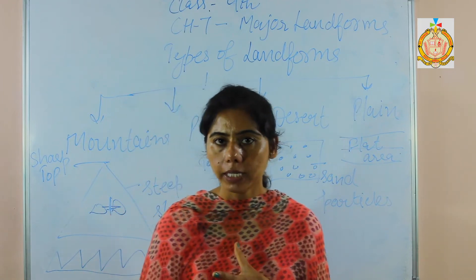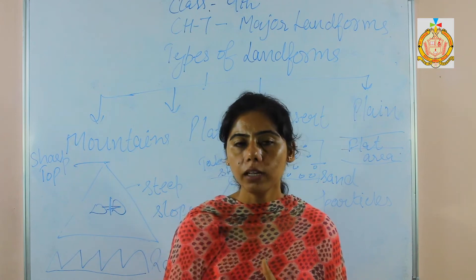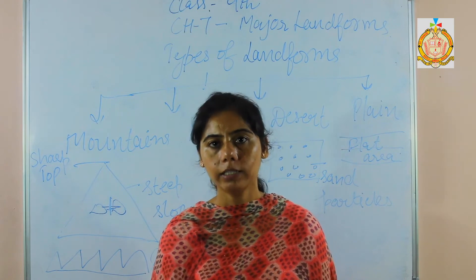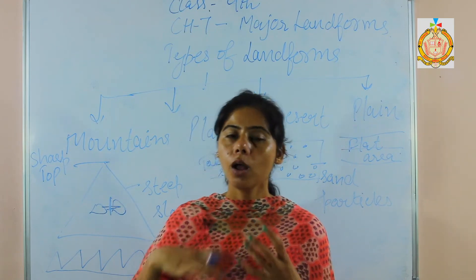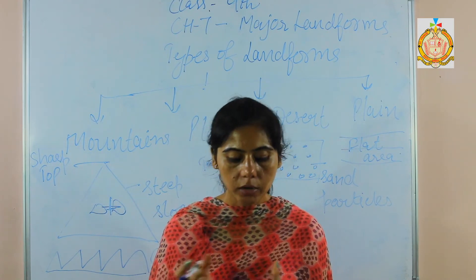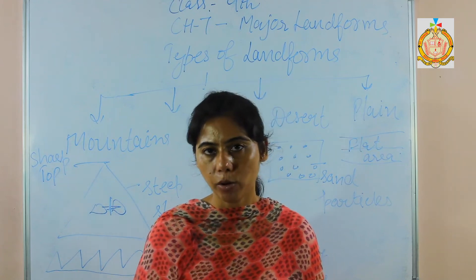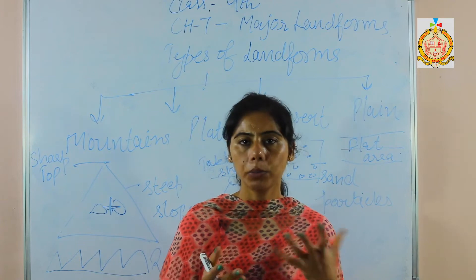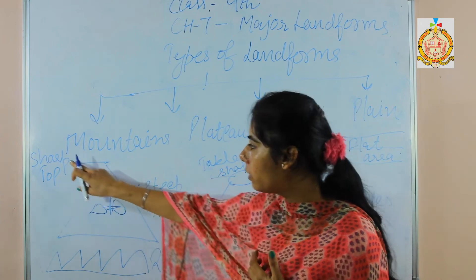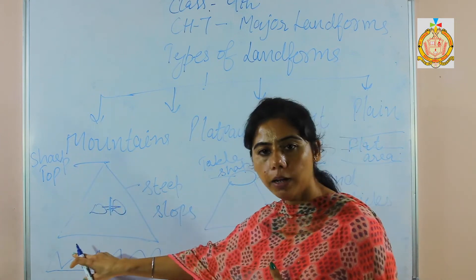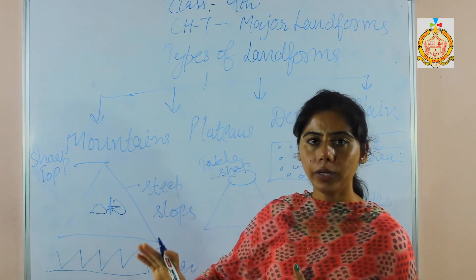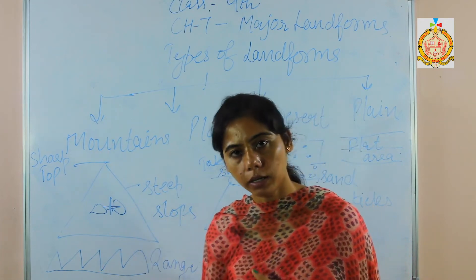The third category of mountains is volcanic mountains. Volcanic mountains are formed due to the eruption of volcanoes, which throw out materials like ash, magma, and lava onto the earth's surface. For example, Mount Kilimanjaro in Africa and Mount Fuji in Japan are examples of such mountains. So there are three kinds of mountains: fold mountains, block mountains, and volcanic mountains.